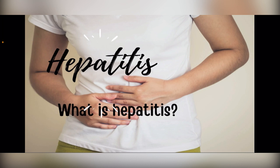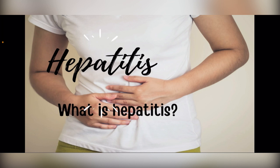Today we are looking at hepatitis. The incidence of hepatitis is on the increase — children, youth, and adults are getting it. Hepatitis is an inflammation of the liver, commonly caused by a virus. There are five main strains of hepatitis virus: hepatitis type A, type B, type C, type D, and type E. While they all cause liver diseases, they differ in modes of transmission, severity of sickness, geographical distribution, and prevention methods.